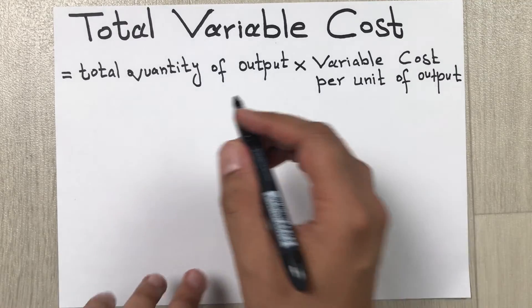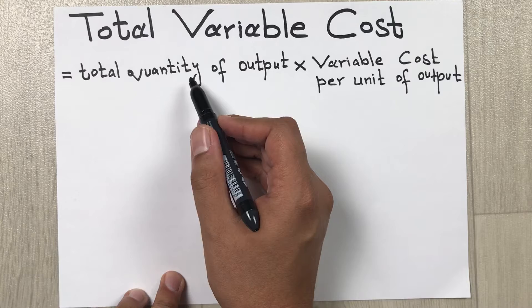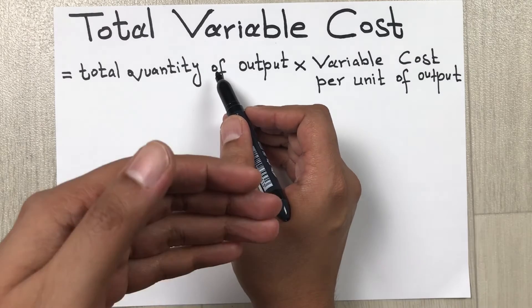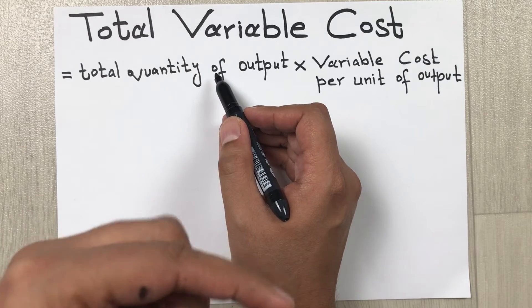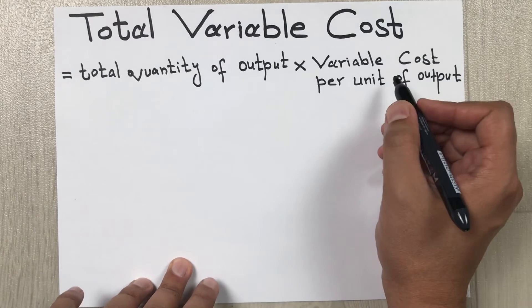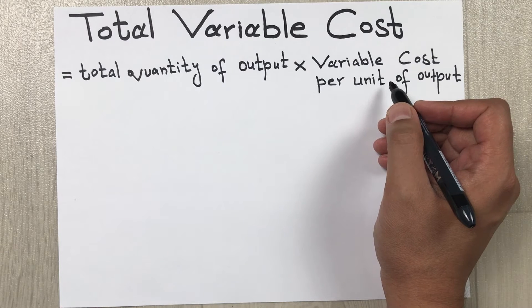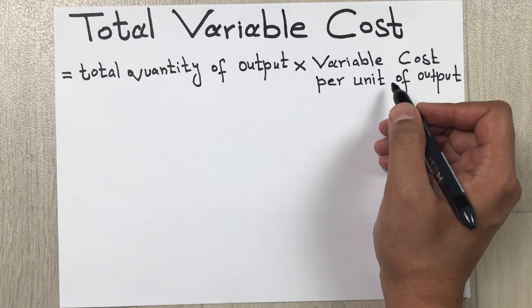Let me explain these two terms. Total quantity of output is how much quantity you produced for a specific product, and variable cost per unit is the sum of all raw materials and labor used to produce a unit of product.